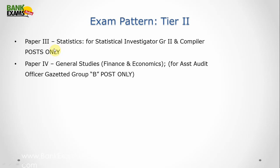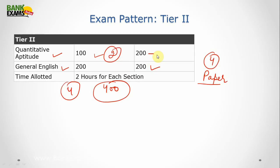There are 2 more papers in tier 2. Paper 3 which is for only Statistical Investigator, Generals or Compiler Posts only, and in which you have to attempt the statistics portion. And paper 4 is related to General Studies, which is for Assistant Auditors and Officer Group B posts only. So these papers are optional but these papers are compulsory for all the candidates.